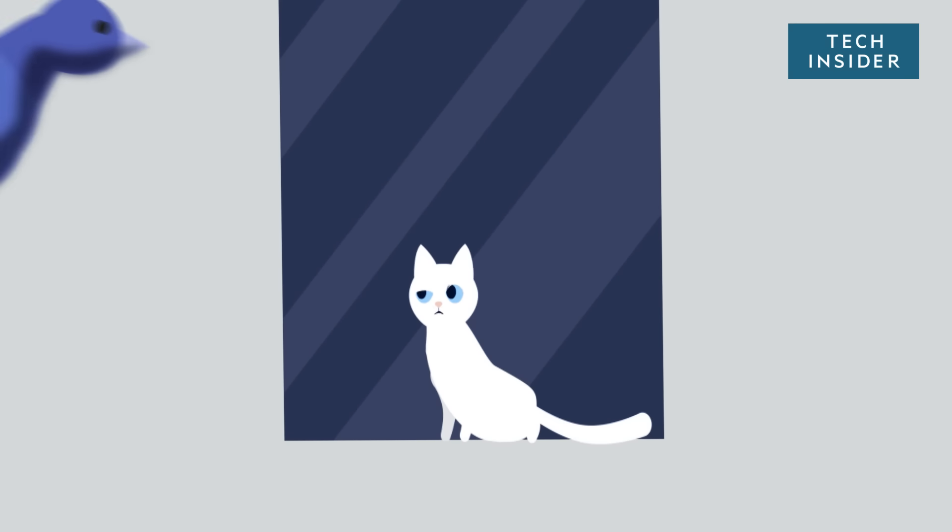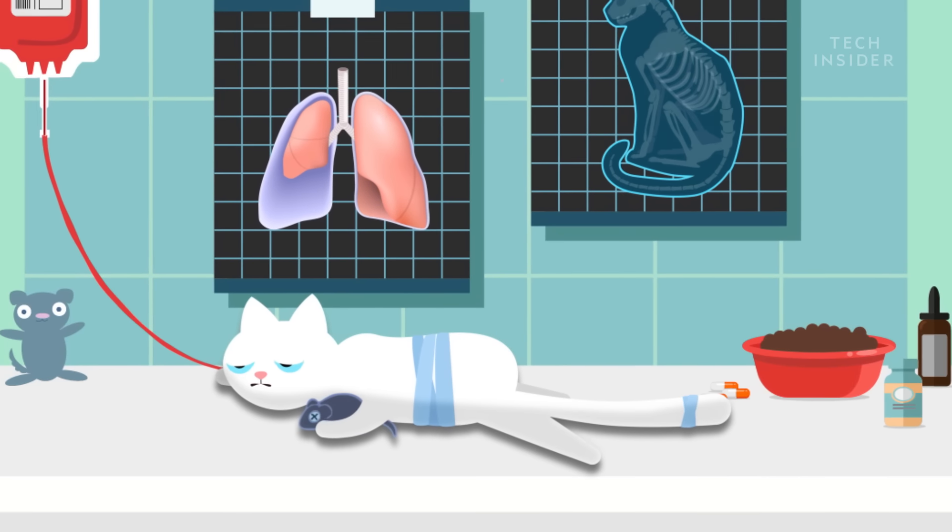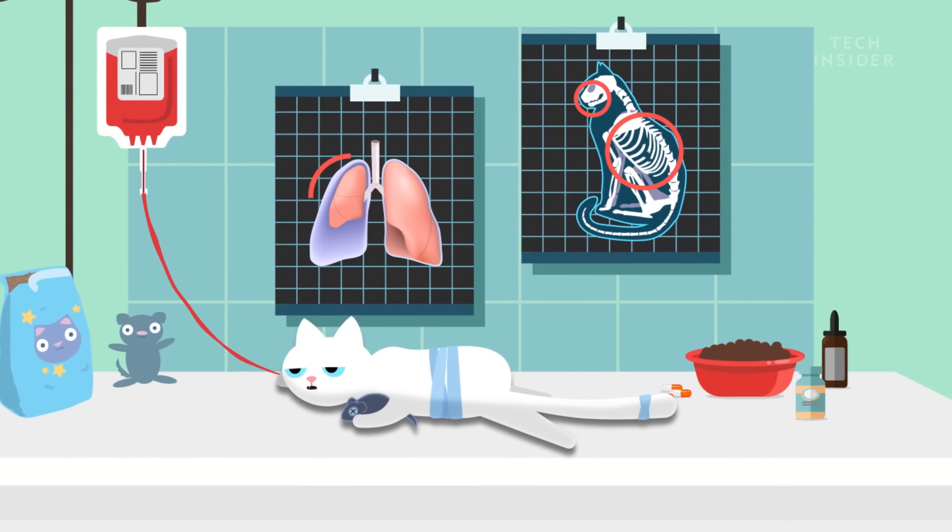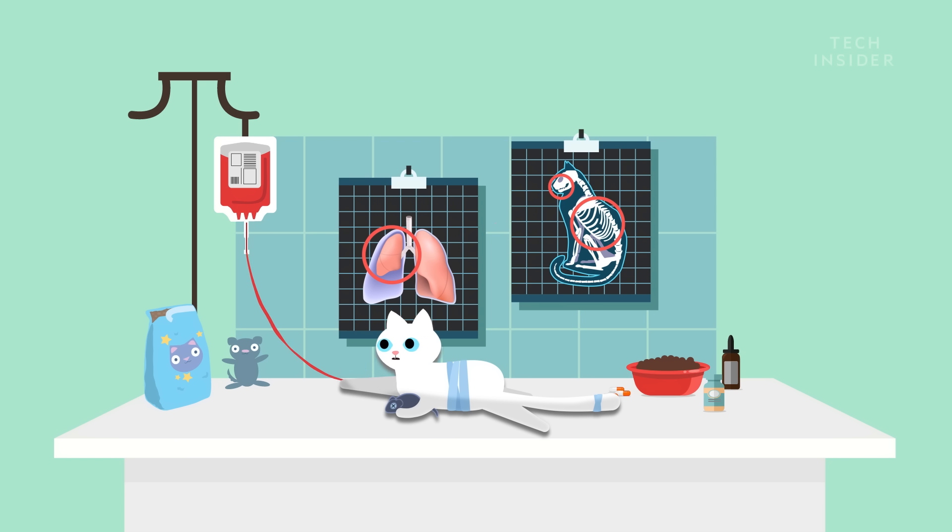32 stories above the streets of New York City, a cat fell from a window and lived. After vets treated the cat's chipped tooth and collapsed lungs, the feline was sent home two days later.